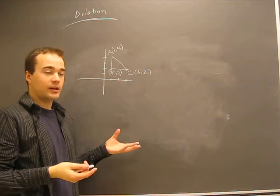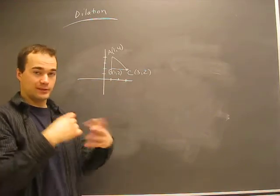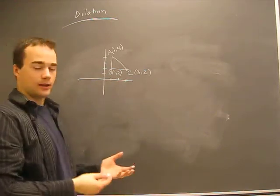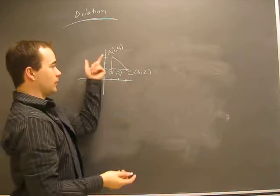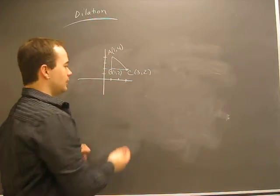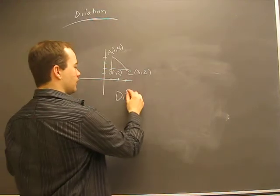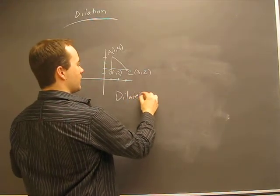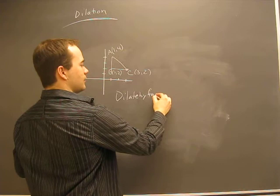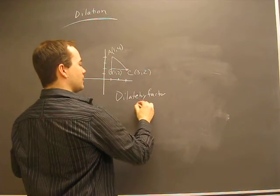We want to dilate this by a factor of something, and it'll say what are the new points? It already gives us point A, B, and C, but let's pick a factor. Why don't we say a factor of four? Okay, dilate by, well, not three, how's that? Dilate by a factor of three.